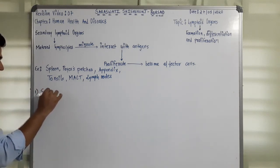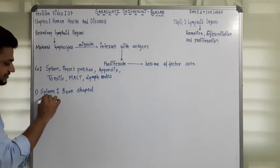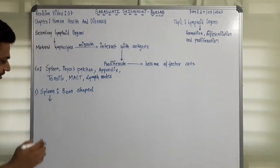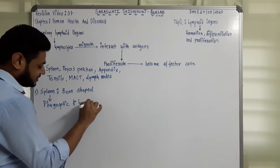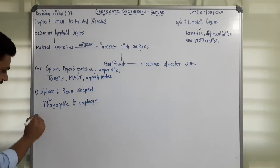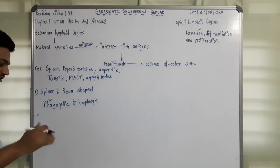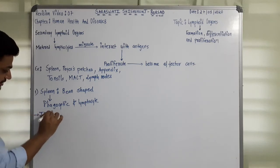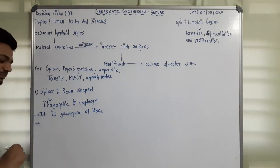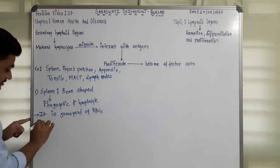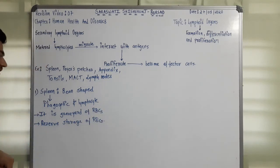The first secondary lymphoid organ we discuss is spleen. Spleen is a bean-shaped organ. It contains two types of cells: phagocytic cells, which can engulf foreign particles, and lymphocytes, which can respond to antigens. Spleen is also called the graveyard of RBC, as old RBCs get deposited and undergo denaturation there. It also serves as a reserve storage of RBC, acting as a blood bank.